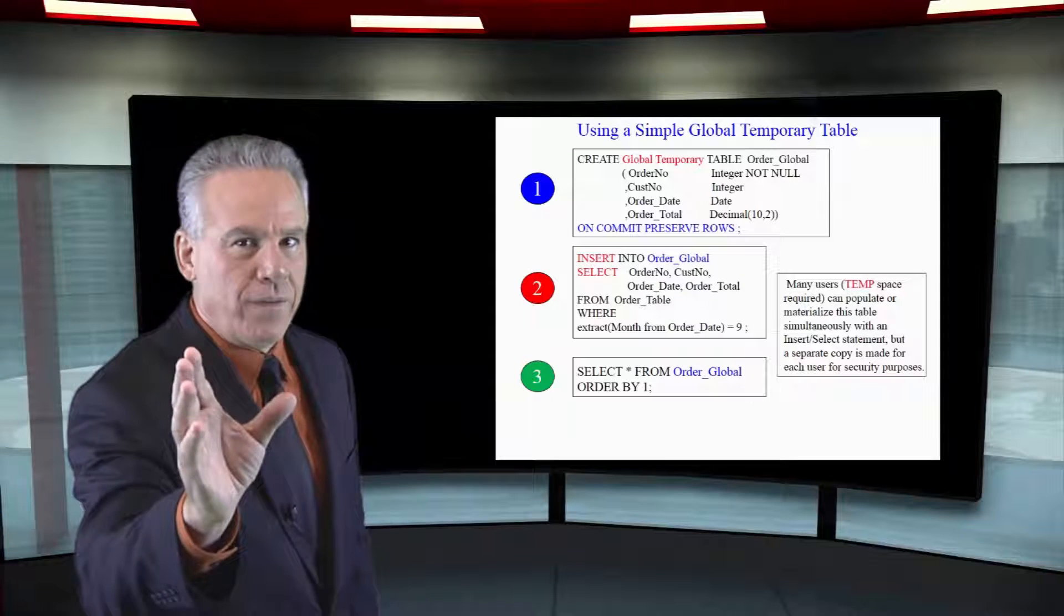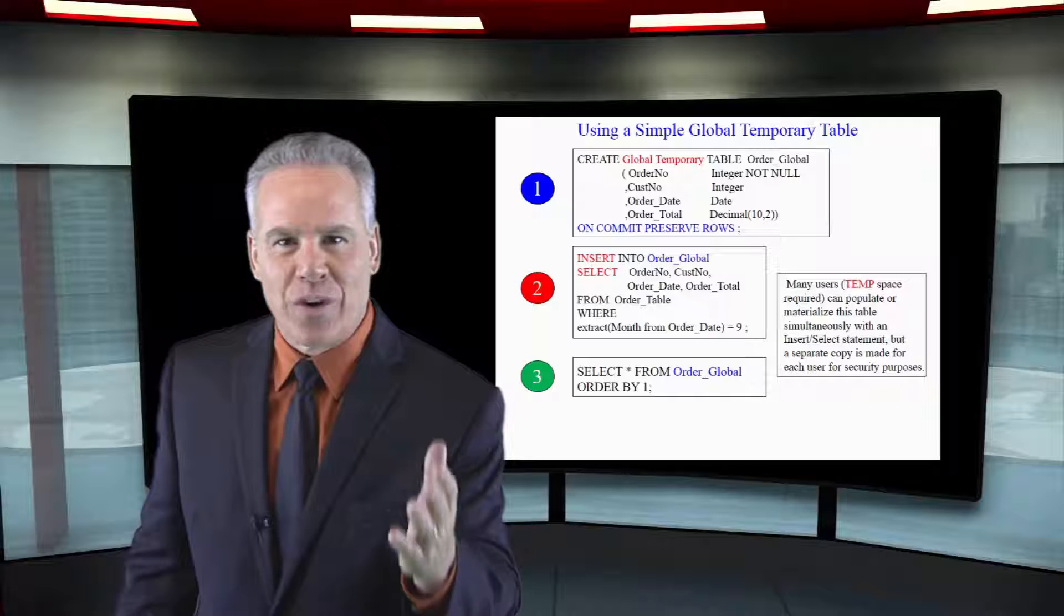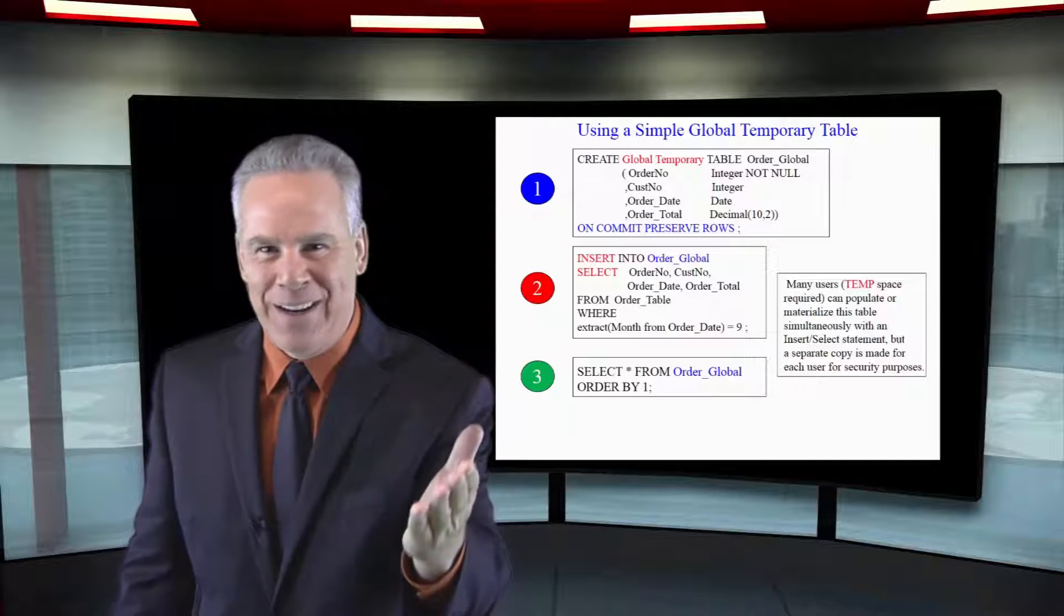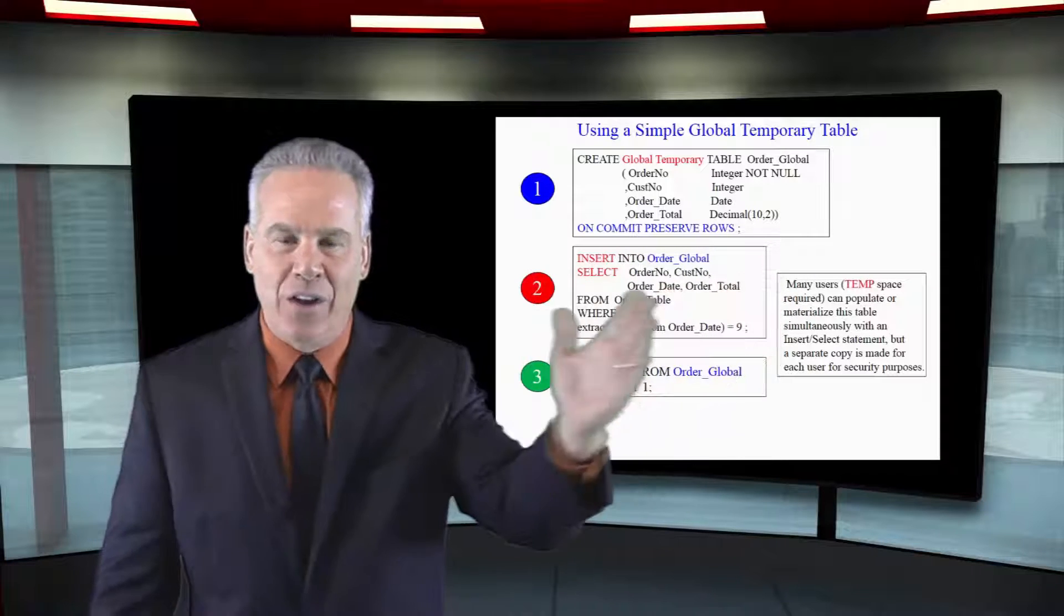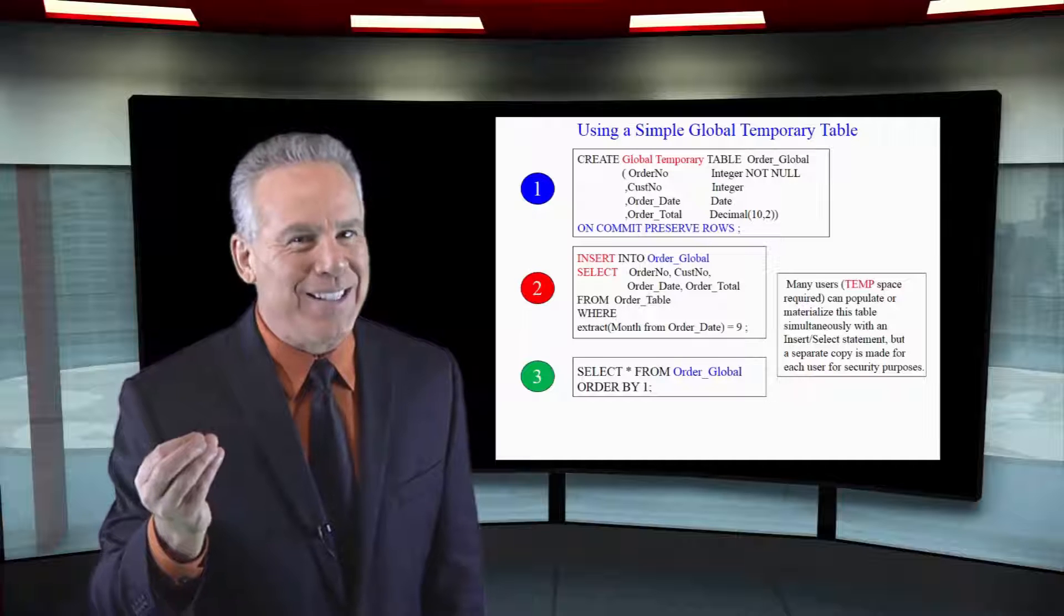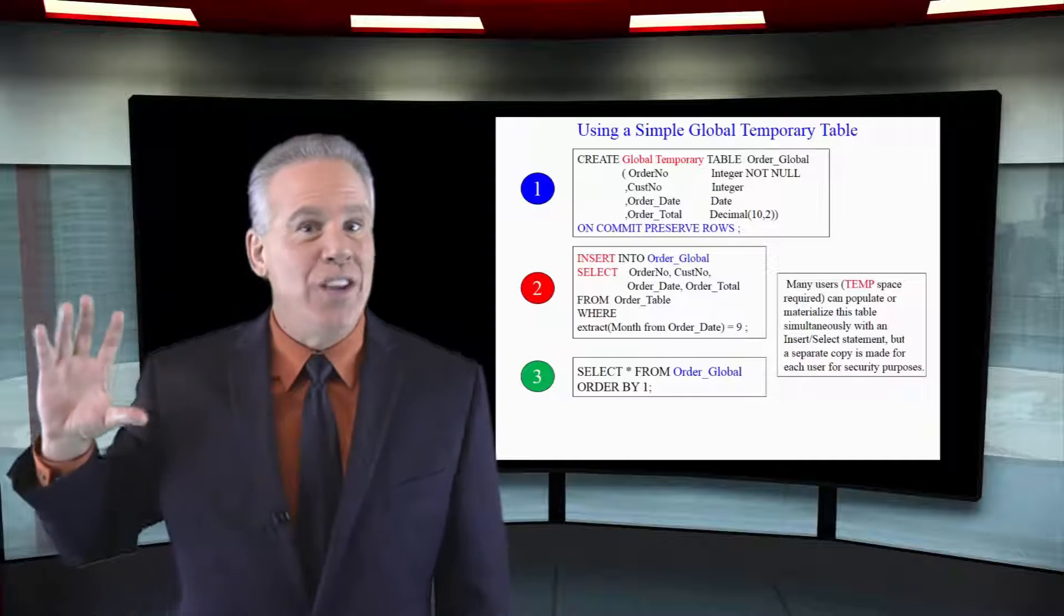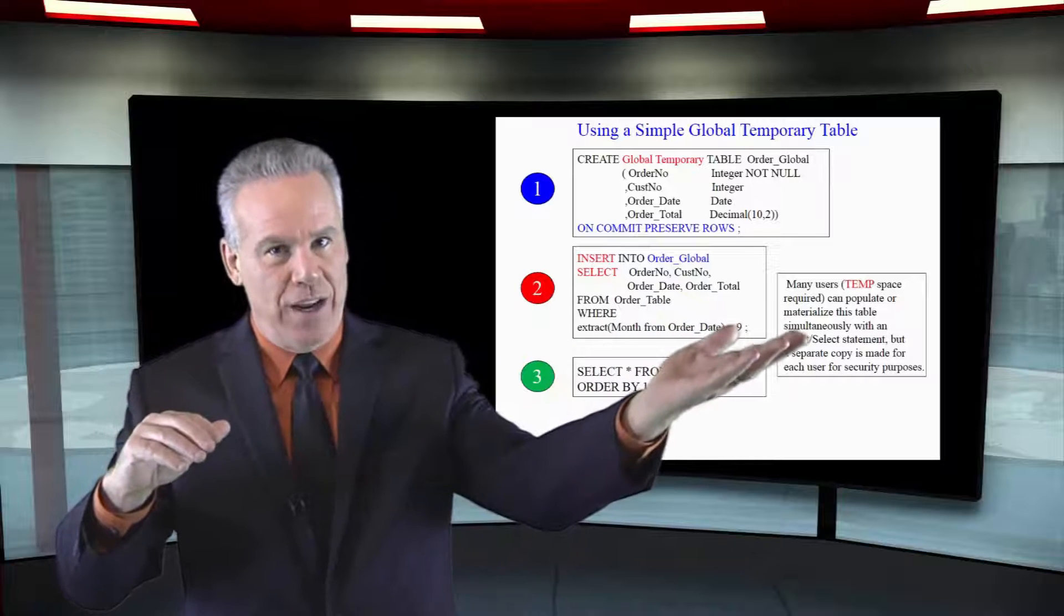But when you log off, the data is removed but the table structure stays permanently. Knowing this, it's fantastic for when you're doing load jobs, ETL jobs. You know that table's out there, you know it's always empty, and you know it's not using your spool space to materialize it like a volatile table would.